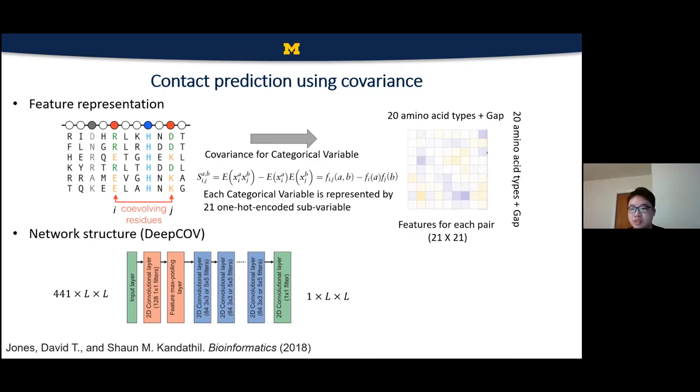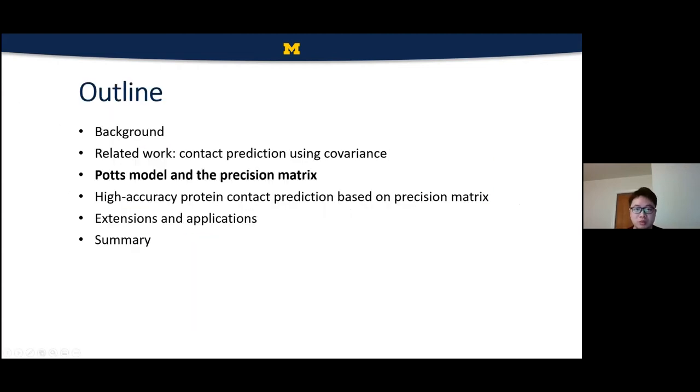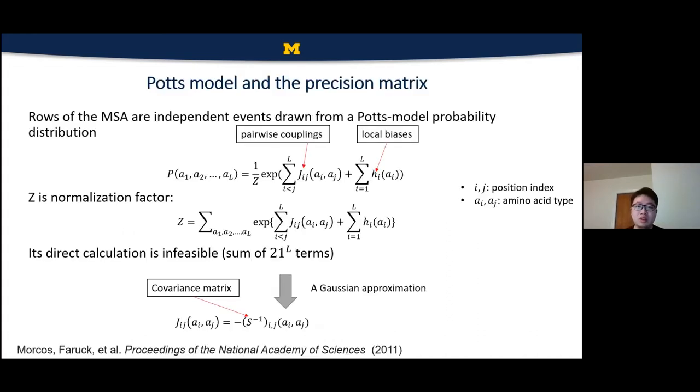However, the covariance just simply measures some kind of marginal dependency between these two variables without considering other positions or variables in a multiple sequence alignment. So next, I'm going to introduce a global model because the covariance can be considered as a local model. That in a global model, the coupling parameters between variables is called Potts model.